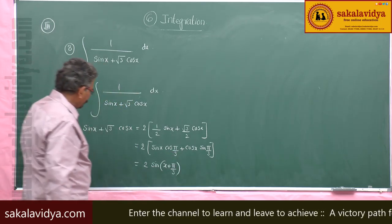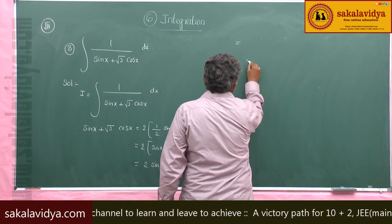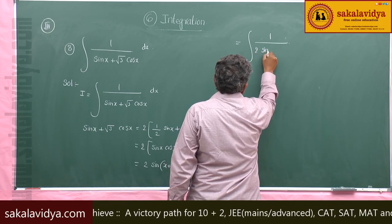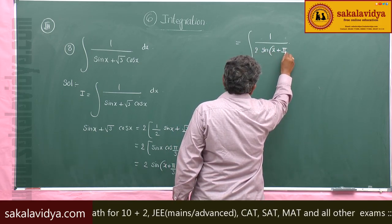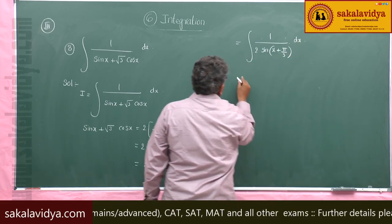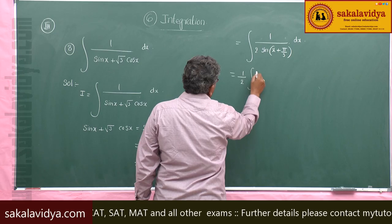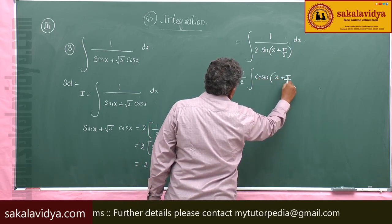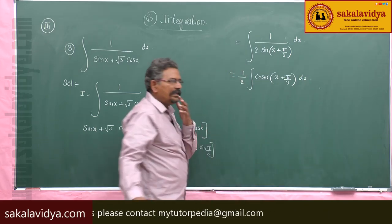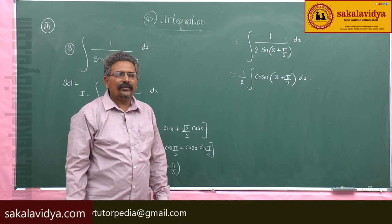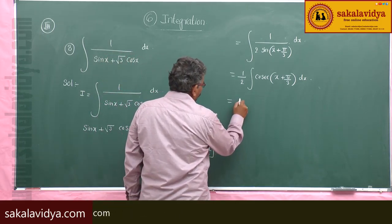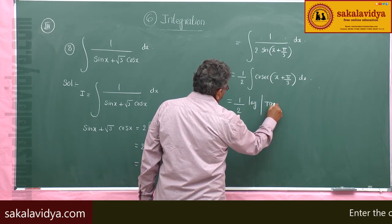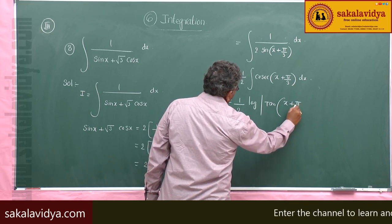So now I becomes integral of 1 by (2 · sin(x + π/3)) dx. Taking 1/2 out as a constant, we get (1/2) · integral of cosec(x + π/3) dx. The integral of cosec x is log|tan(x/2)|, so this gives (1/2) · log|tan((x + π/3)/2)|.